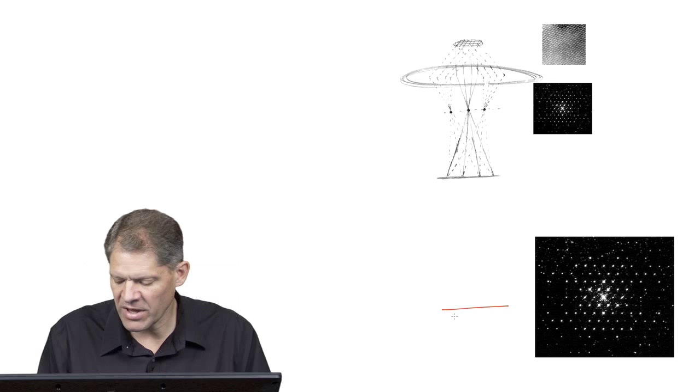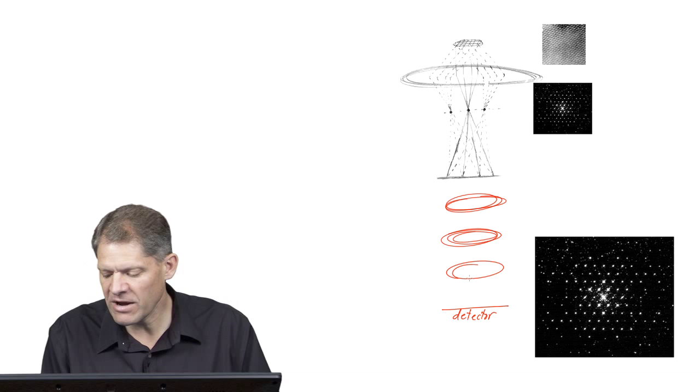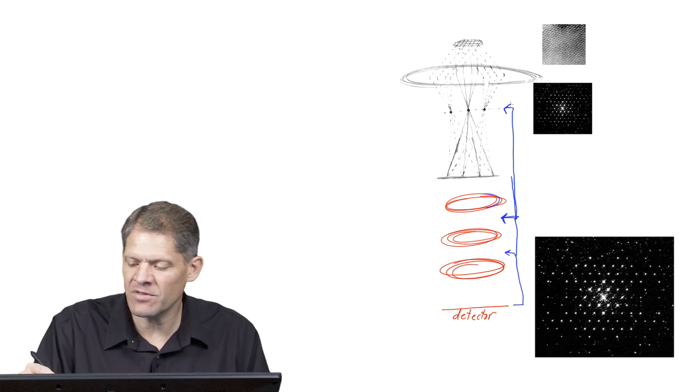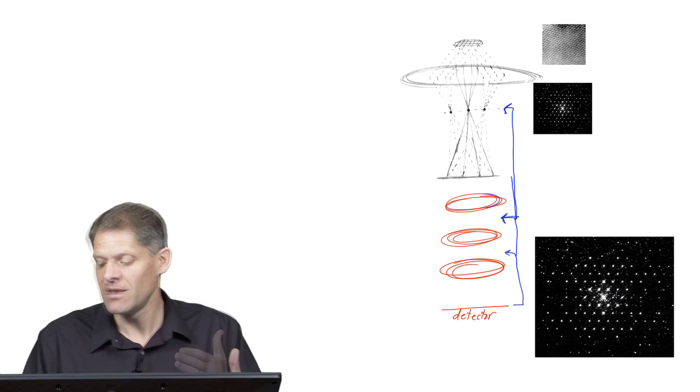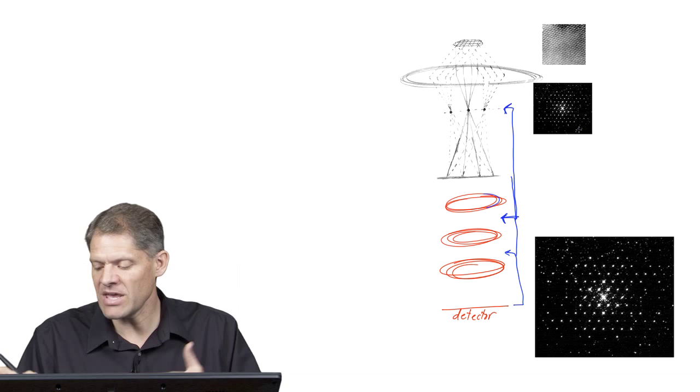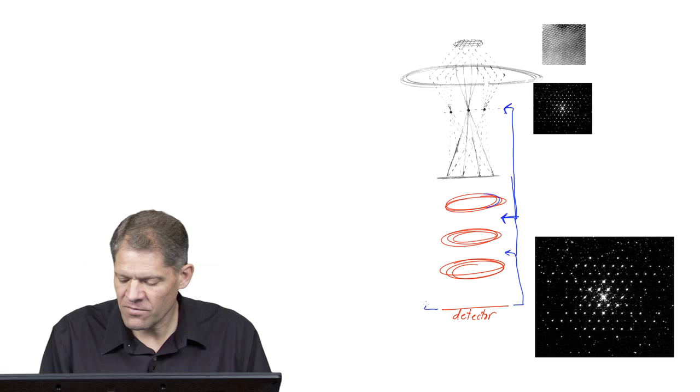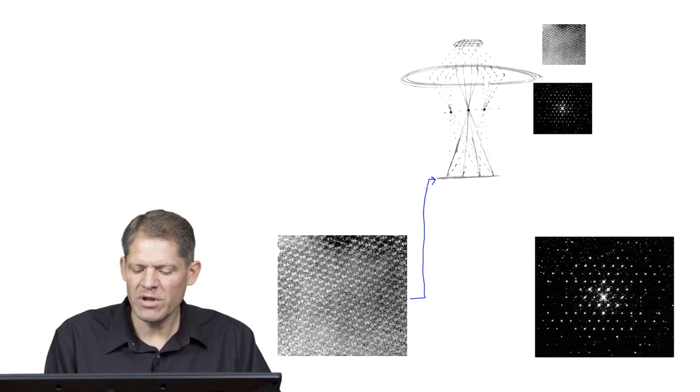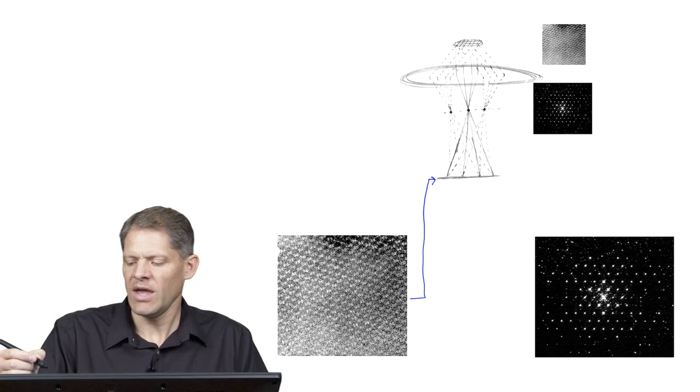At some level below that first image plane we have a detector. Depending on the strength of this final lens, this plane can be made conjugate either to the back focal plane of the objective lens, in which case we get a magnified representation of the diffraction pattern, or if the detector is made conjugate to the image plane, then we see a real space picture of the original crystal.